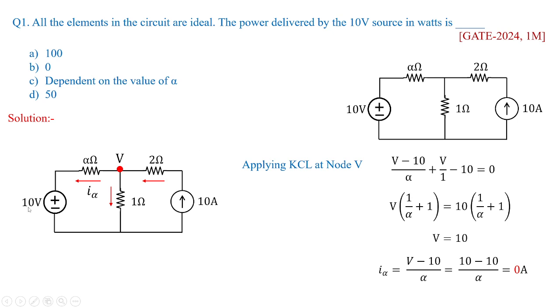So in fact this 10 volts would be delivering power which is nothing but equivalent to V into I. So V is 10 volts and I is 0. Therefore power delivered by this 10 volts is 0 watts. So option B is the right answer.